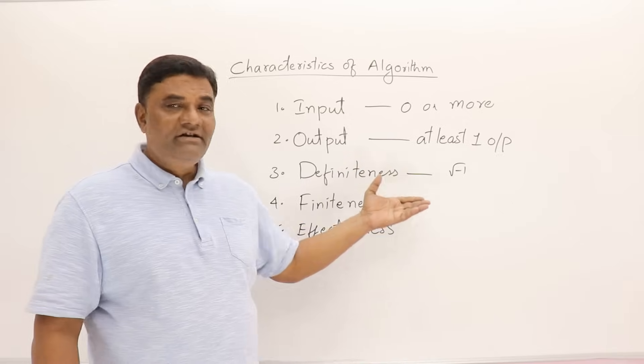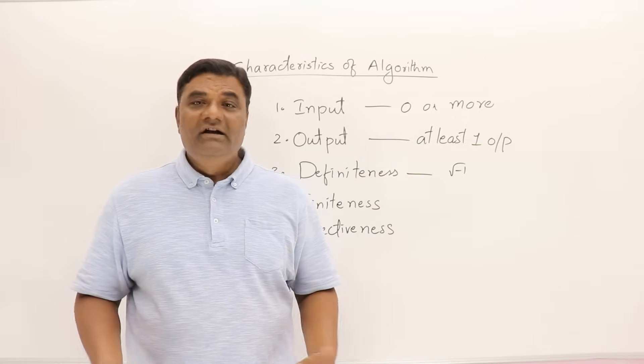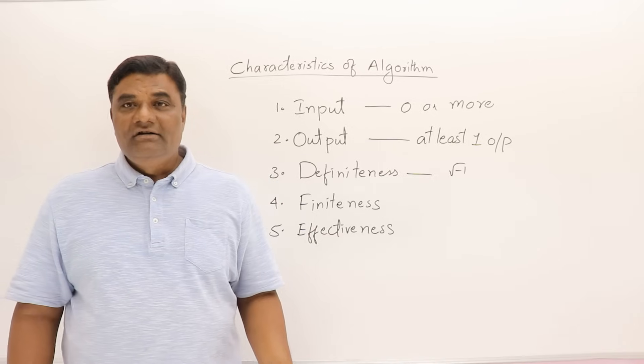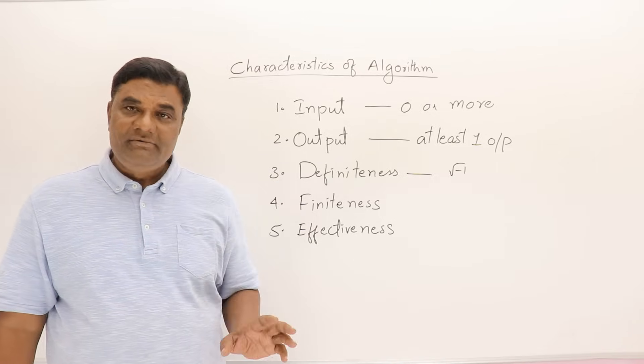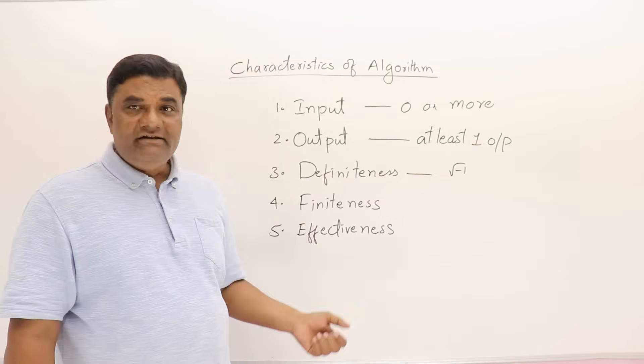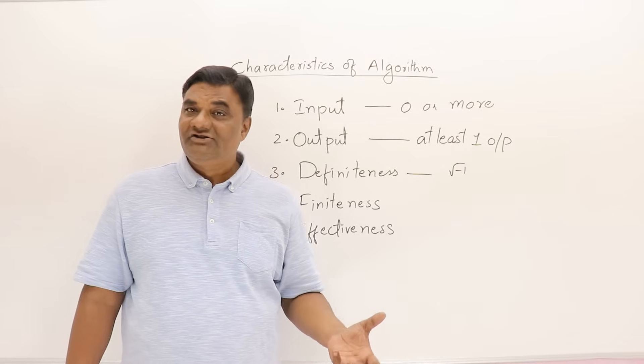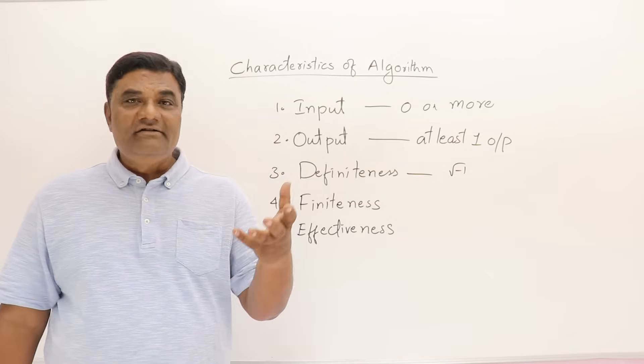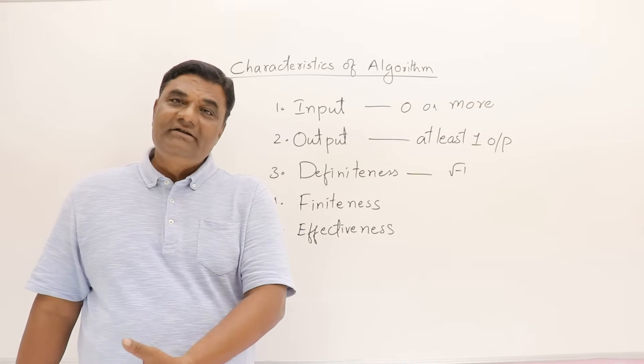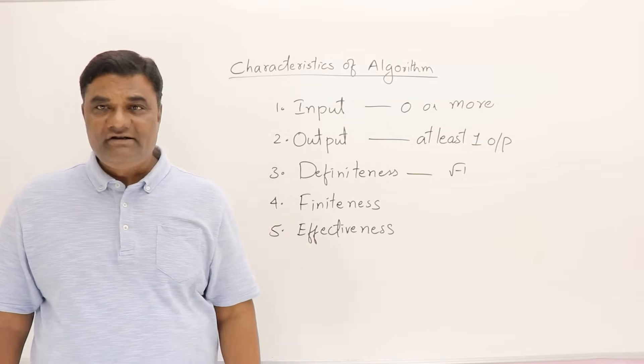Every step that we are doing here is a known step and nothing is magical. Only known steps you are performing. And finiteness—if you are preparing a recipe, you will stop at some point and the dish is ready. If you are doing a chemical experiment, you will stop at some point and the solution is ready, definitely.